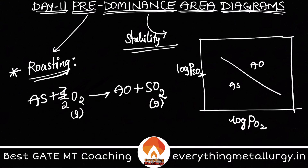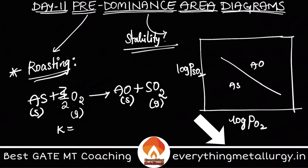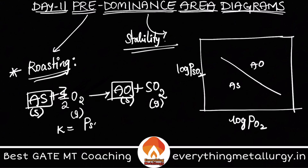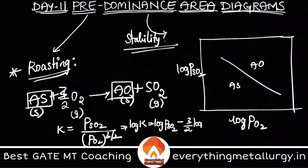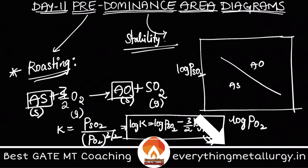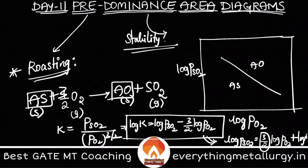To get that particular line, just apply the equilibrium constant concept. AS and AO are in standard state so their activities are 1. So K = P(SO₂) / P(O₂)^(3/2). Applying log: log K = log P(SO₂) − 3/2 · log P(O₂). Rearranging: log P(SO₂) = 3/2 · log P(O₂) + log K. So the slope is 3/2, which is a positive slope.